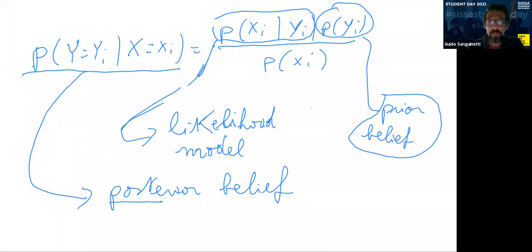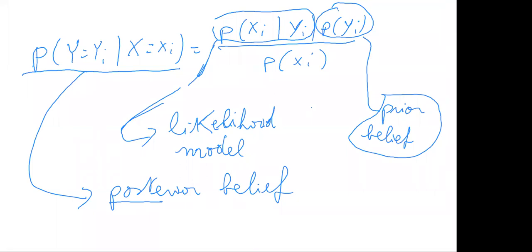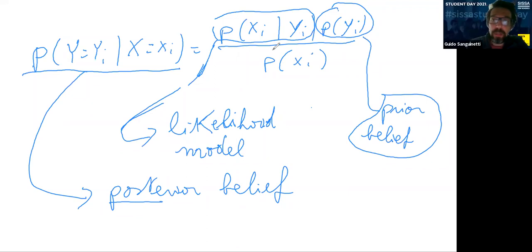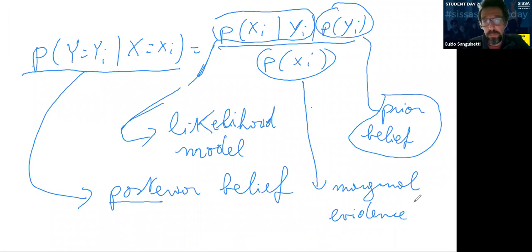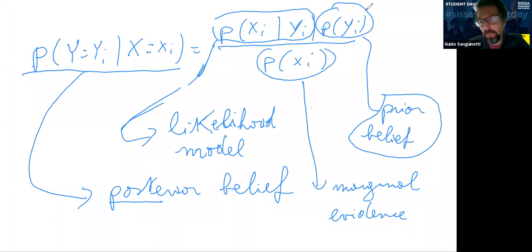Question: in the denominator of Bayes' theorem, you wrote P(xi) — is that the marginal probability? Absolutely. That quantity has many names: it's the marginal, and it's also called the evidence. It is the probability of the observations regardless of what the unobserved Y variable would be — the evidence of the observations.